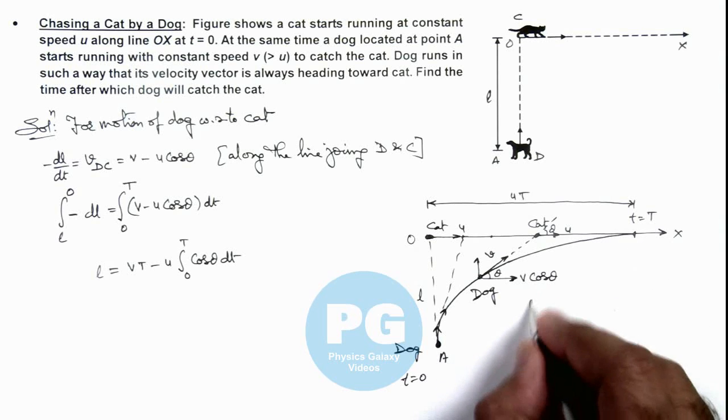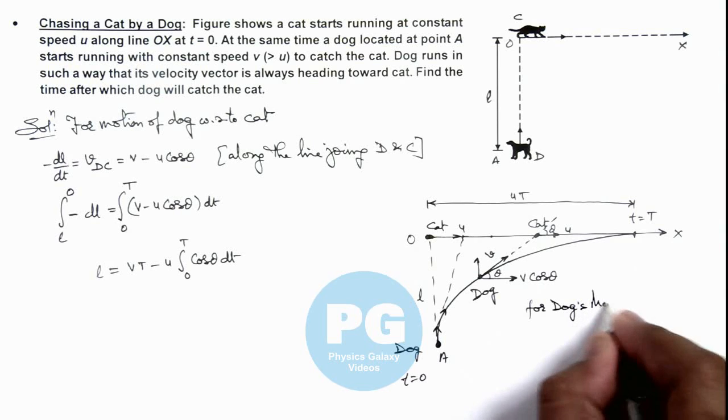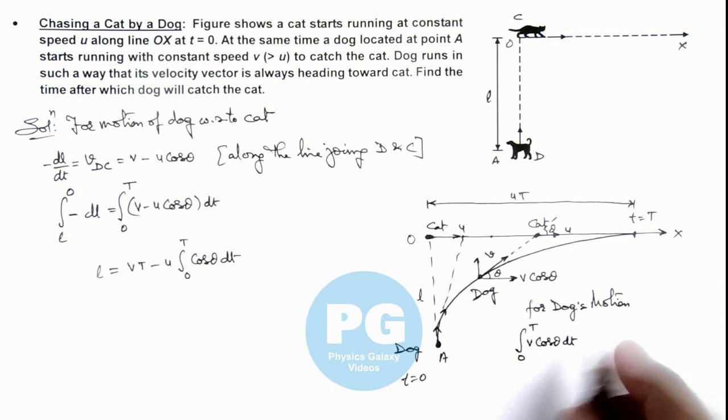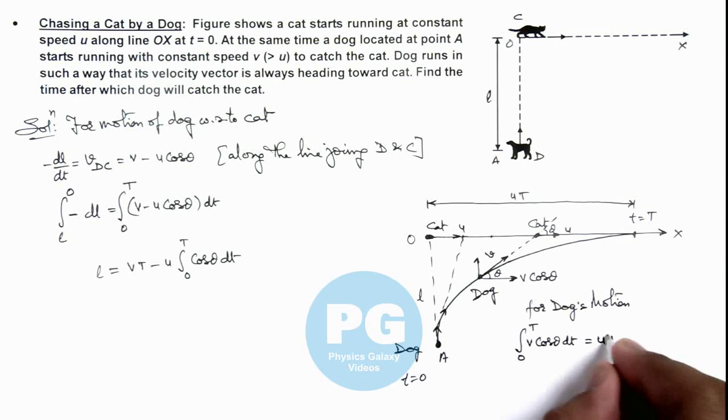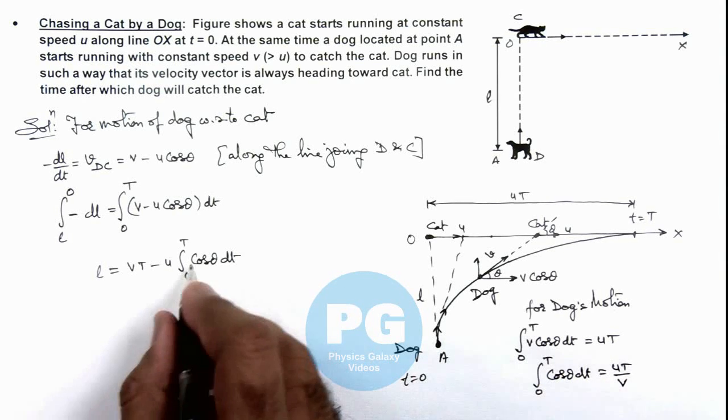So here we can write for dog's motion, we can write integration of v cos theta d t from zero to t is the displacement of dog in x direction which is equal to u t. So this term will give us the value of integral zero to t cos theta d t, that is u t by v. We substitute this integral value over here.